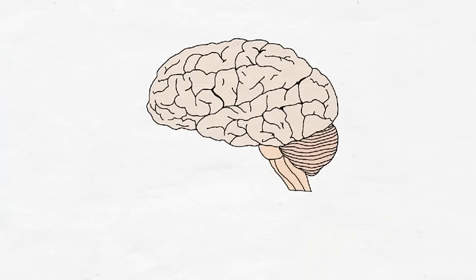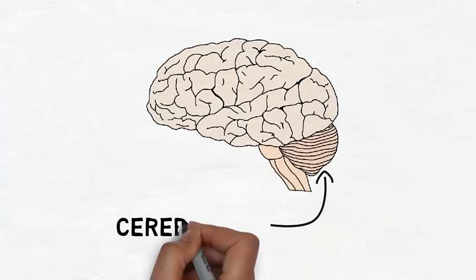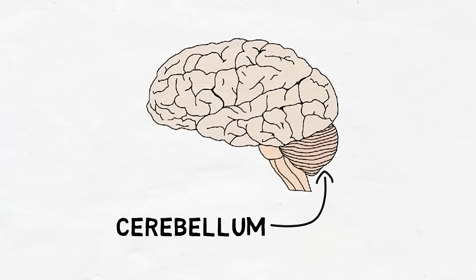Cerebellum is Latin for little brain, and the cerebellum does look like a miniature version of the brain as it protrudes from under the posterior and inferior region of the cerebral cortex.